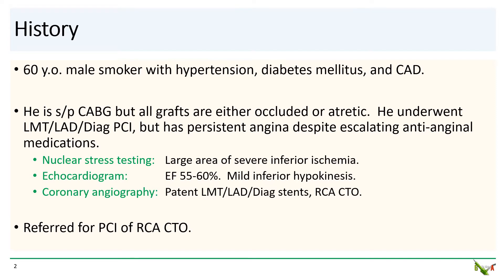He underwent nuclear stress testing, which showed a large area of inferior ischemia, and echo showed a normal ejection fraction with mild inferior hypokinesis. He underwent a cath, which showed patent stents and a CTO of the RCA. He was referred for PCI of the RCA CTO.